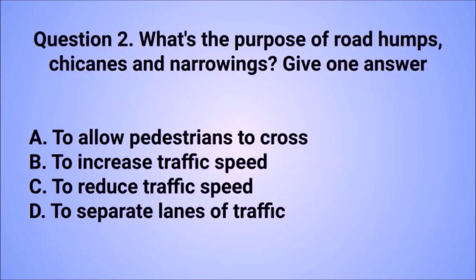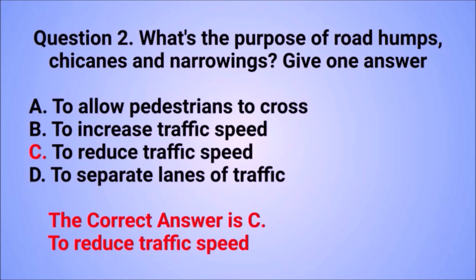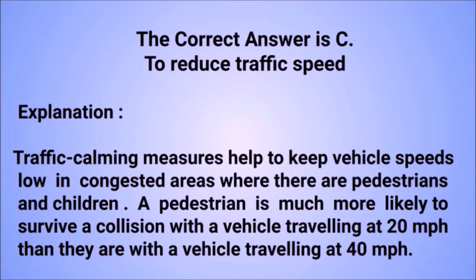Question 2. What's the purpose of road humps, chicanes and narrowings? The correct answer is C: To reduce traffic speed. Traffic calming measures help to keep vehicle speeds low in congested areas where there are pedestrians and children. A pedestrian is much more likely to survive a collision with a vehicle traveling at 20 mph than with a vehicle traveling at 40 mph.